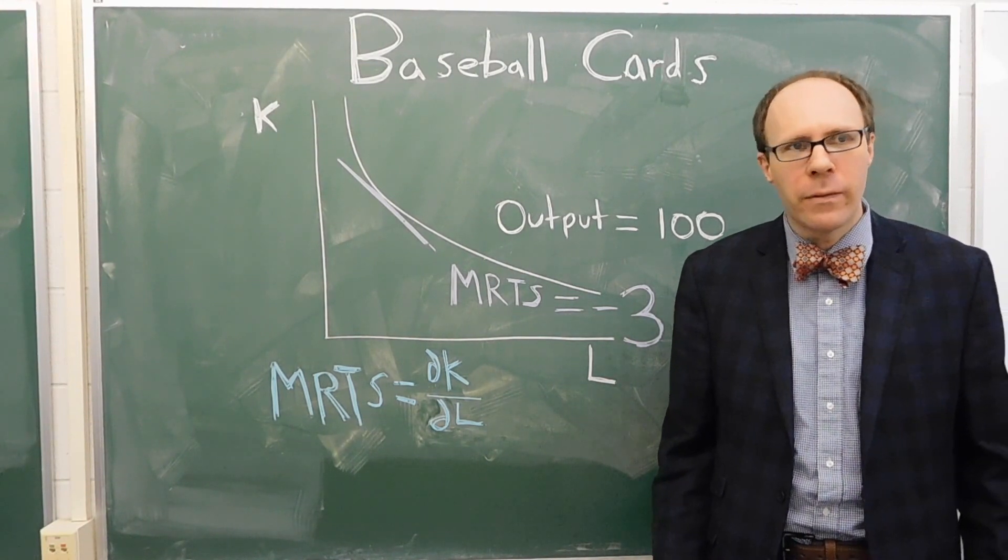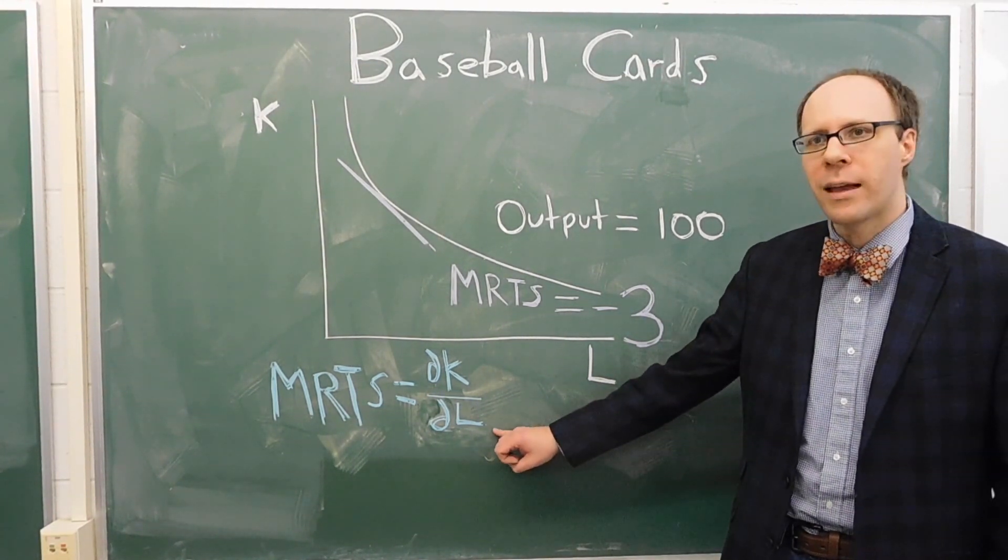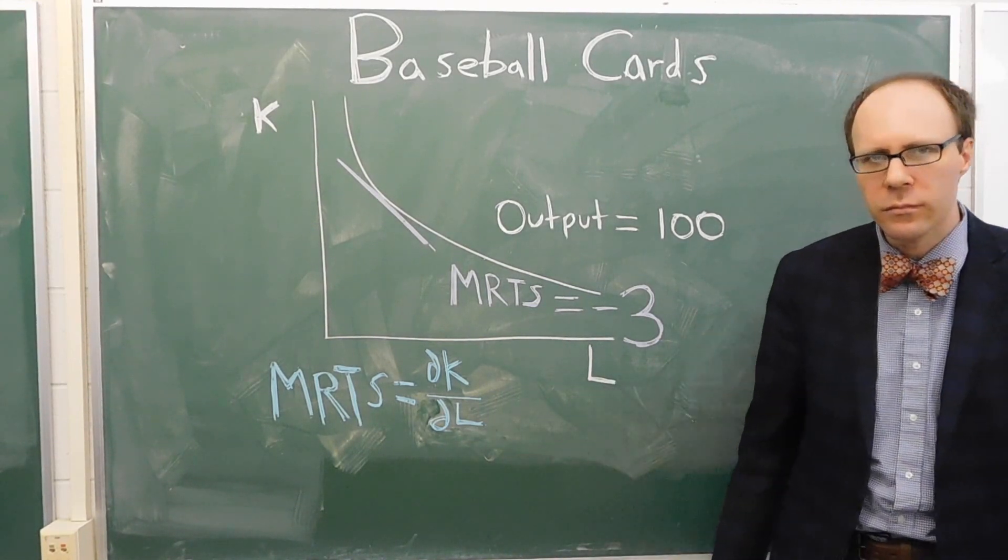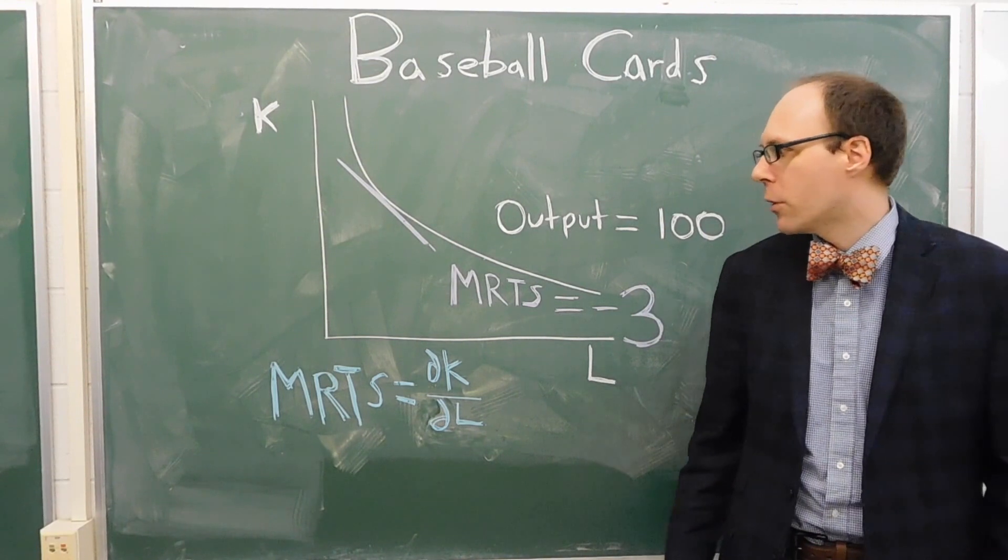So to do this we take the rate of change of capital due to the rate of change in labor, and when we do that we look at this tangent line you'll see in purple.